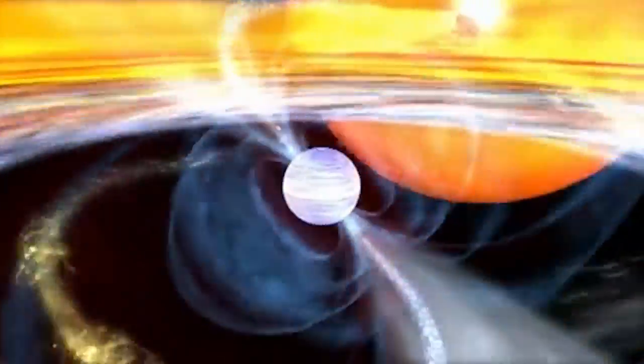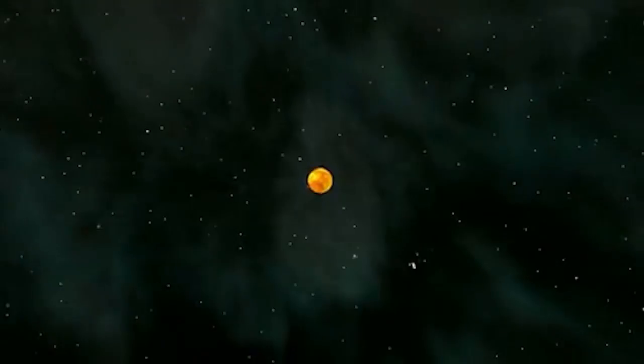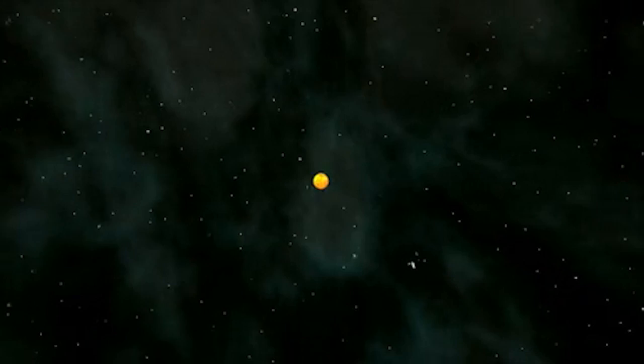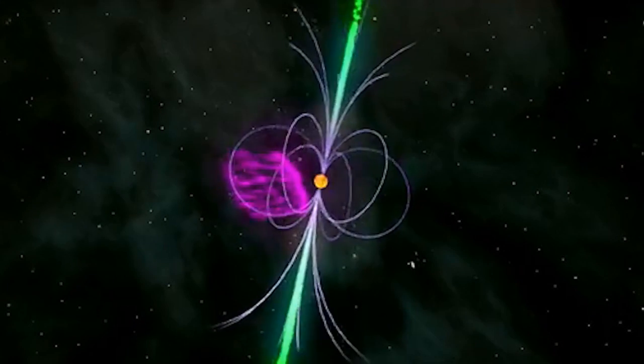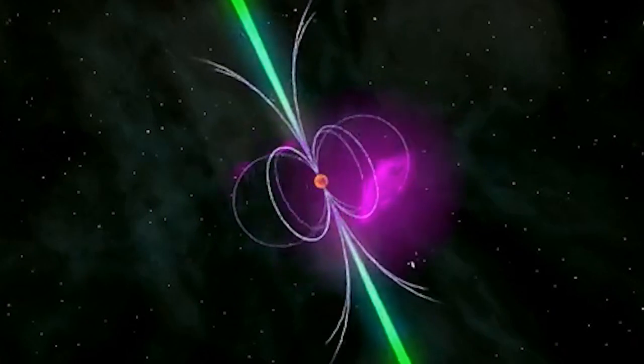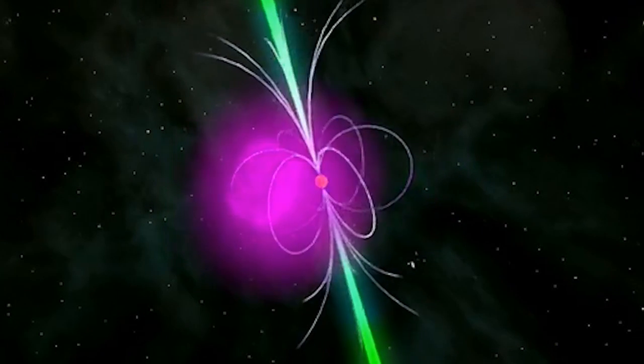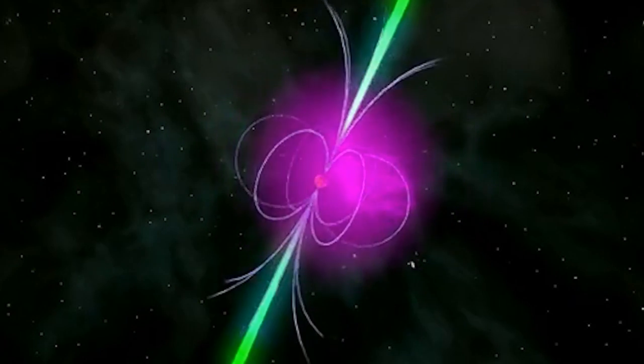Neutron stars are very hot. They're about 20 kilometers in diameter with a mass 1.4 times our sun. One teaspoon of its matter would be over a billion tons on Earth. Because of its small size and high density, neutron stars possess a surface gravitational field 2 times 10 to the 11th power times that of Earth. Can somebody do that math for me?